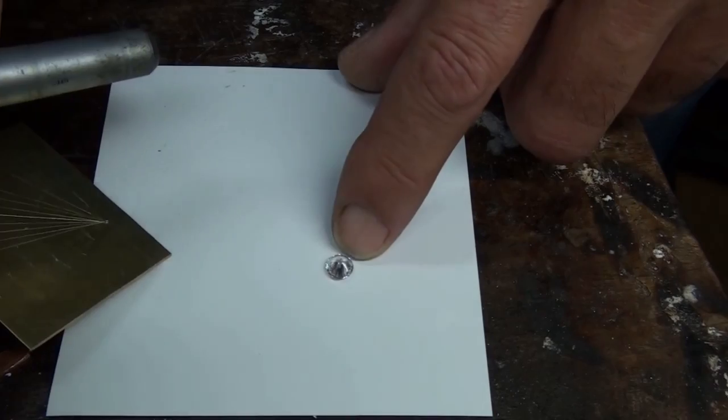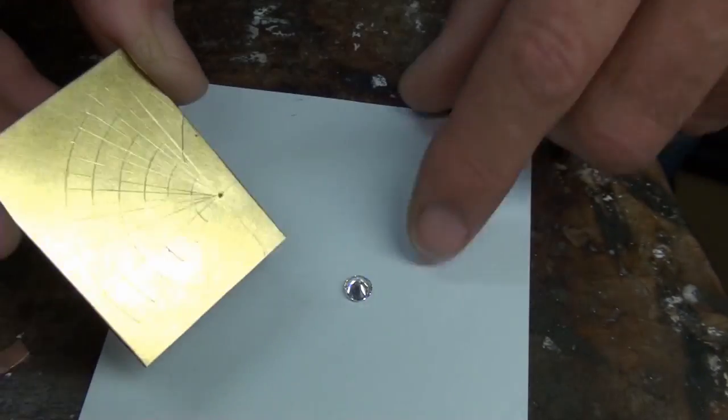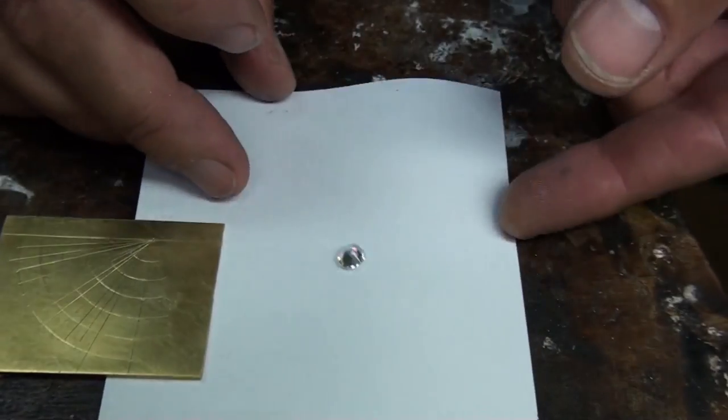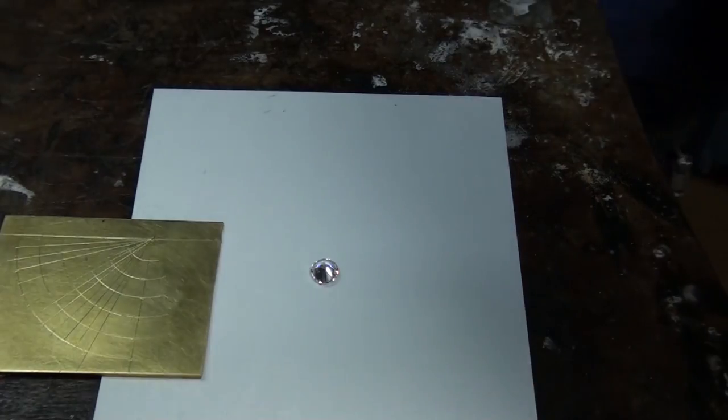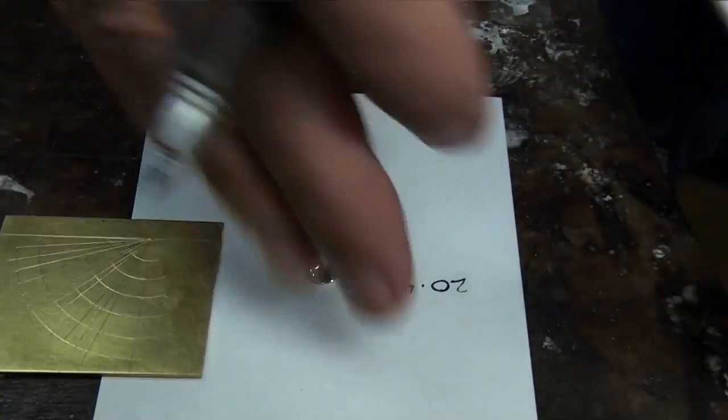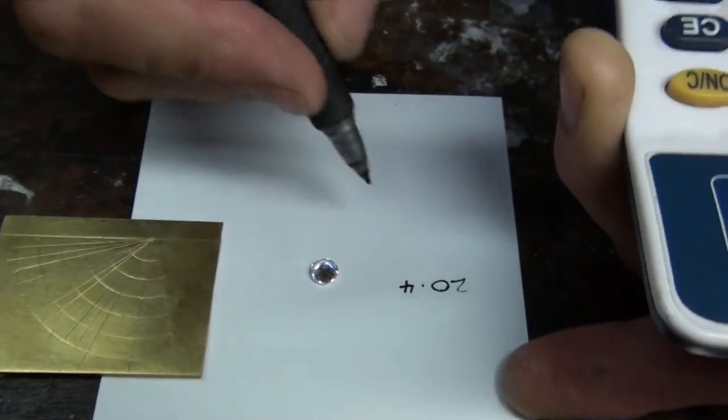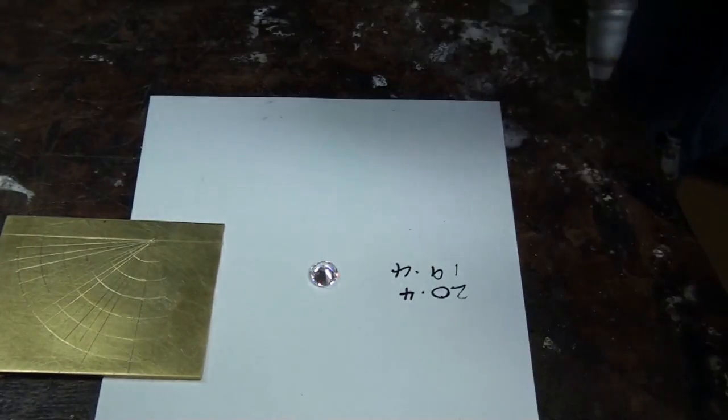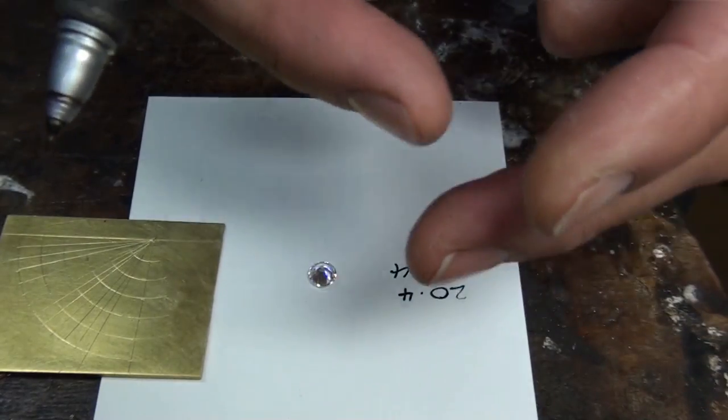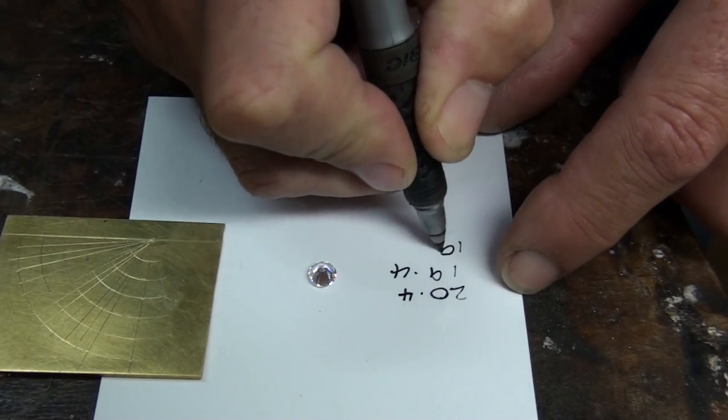For this project I'm using a six and a half millimeter round CZ and I'm going to be using my bezel setting template to make the setting. So what you do is take the diameter of the stone and times it by pi, 3.14 and that in this case gives me a measurement of rounded off to 20.4. Now I'm going to be using one millimeter thick sheet to make the setting, so deduct the thickness and that's giving me 19.4.